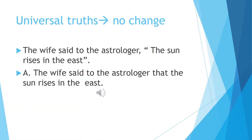The last rule is about universal truths — they do not change. The wife said to the astrologer, 'Sun rises in the east.' You all know the Sun rises in the east, and since she has said it, there will be no change. The indirect speech is: the wife said to the astrologer that the Sun rises in the east. No change — only the inverted commas have been removed. I hope all the rules are understood.